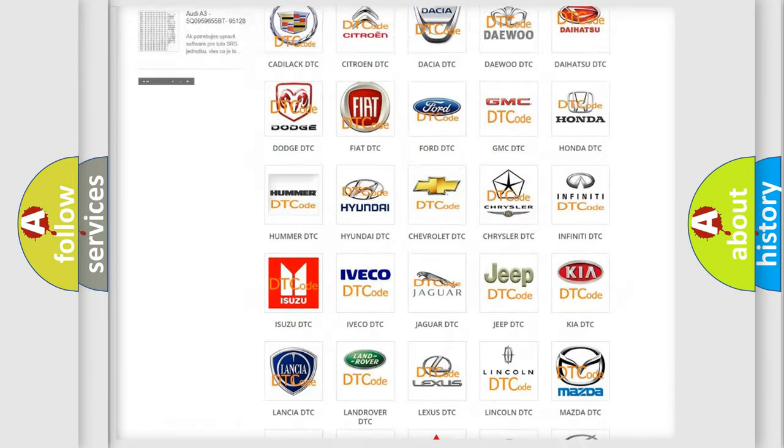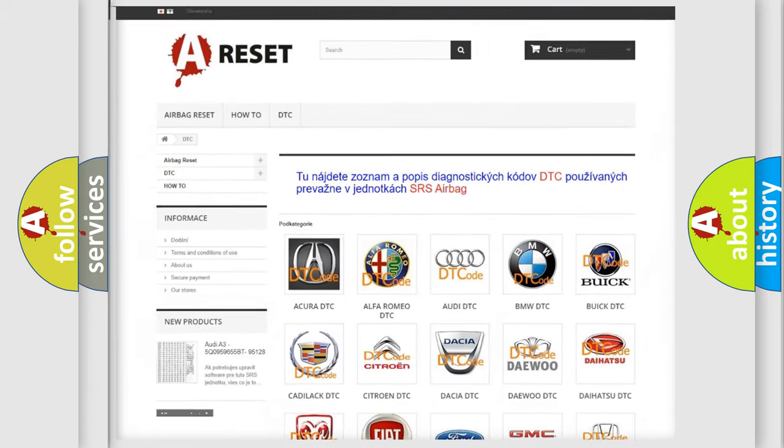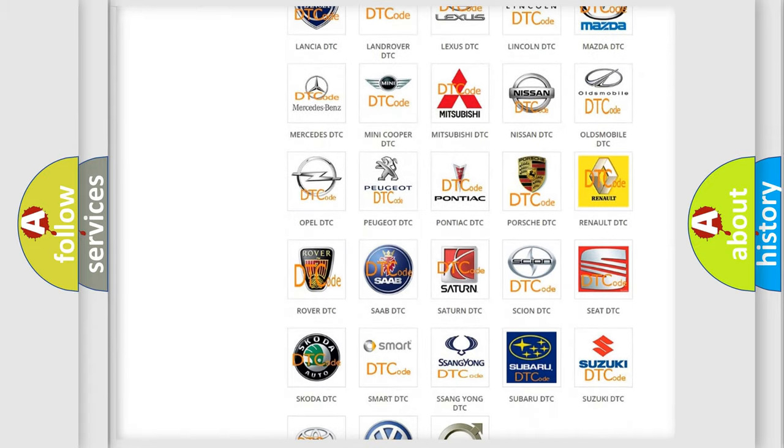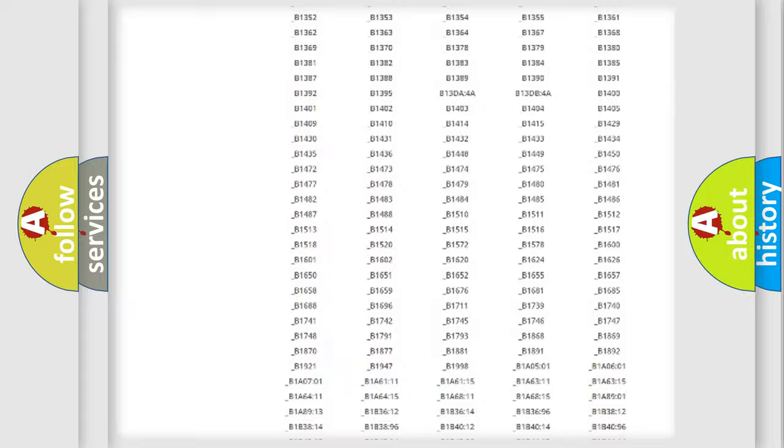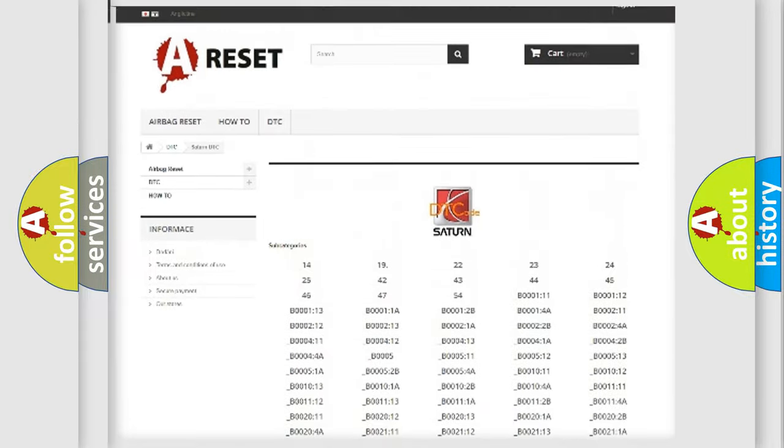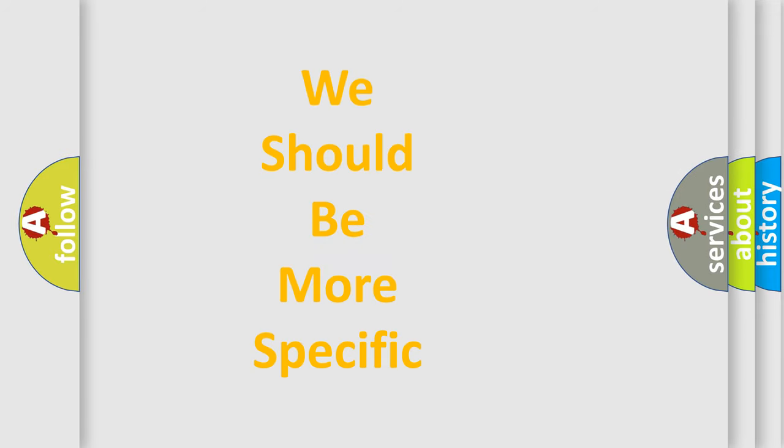Our website airbagreset.sk produces useful videos for you. You do not have to go through the OBD2 protocol anymore to know how to troubleshoot any car breakdown. You will find all the diagnostic codes that can be diagnosed in Saturn vehicles, and many other useful things. The following demonstration will help you look into the world of software for car control units.